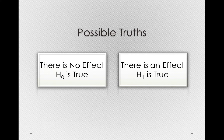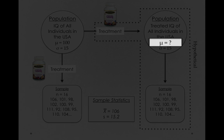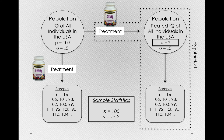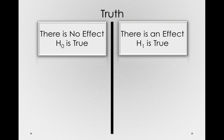Specifically, in the world there are only two possible truths, and one of these has to be true and only one can be true — that is, they're mutually exclusive. Either there is no effect and H0 is actually true, or there is some effect and H1 is true. It really is the case that the mean after treatment is either equal to 100 or not equal to 100. We're either in a world where there is no effect and we're measuring only sampling error, or we're in a world where there is some effect and our sample is measuring not only sampling error, but also that true effect.